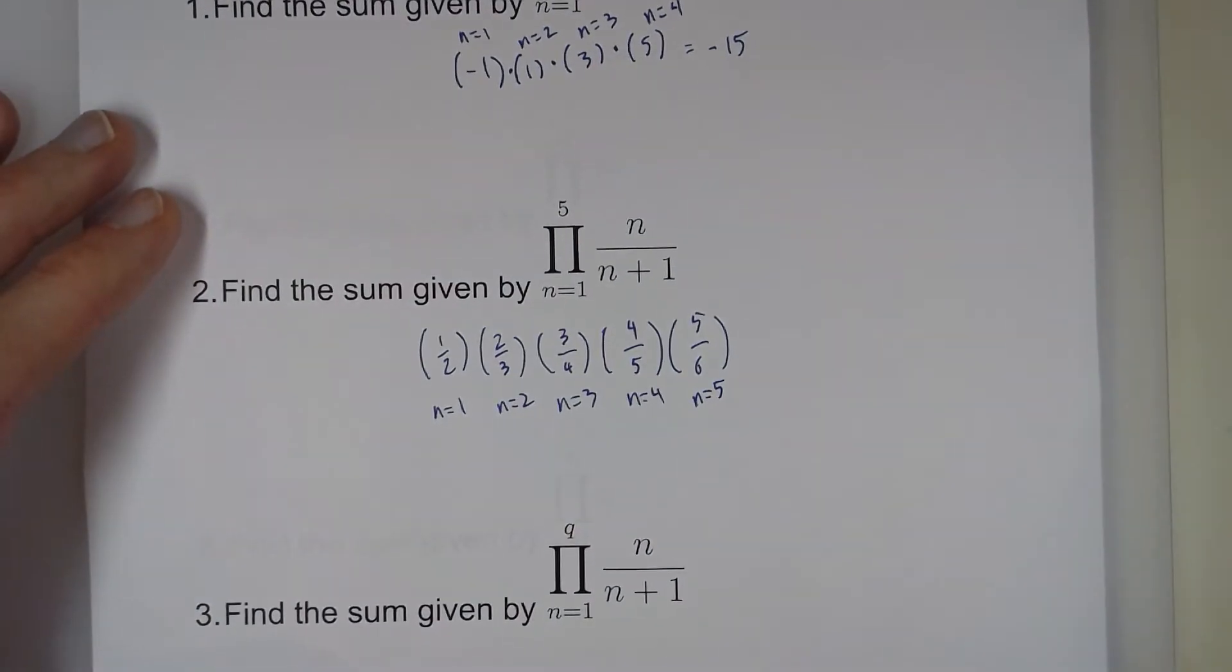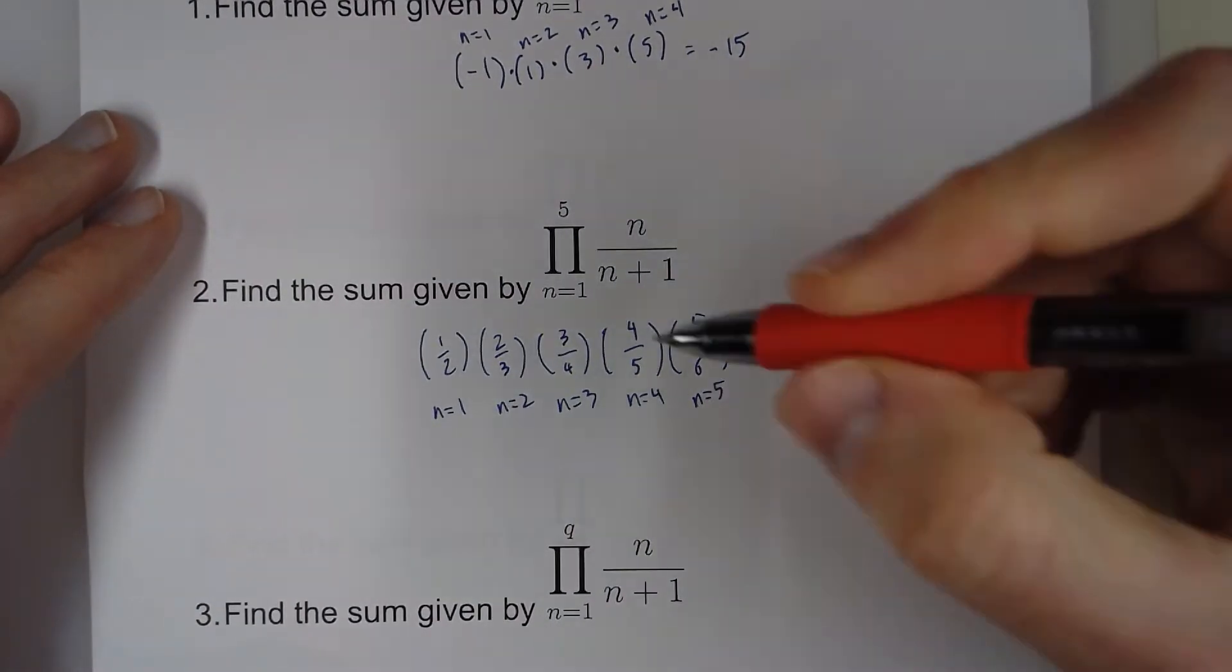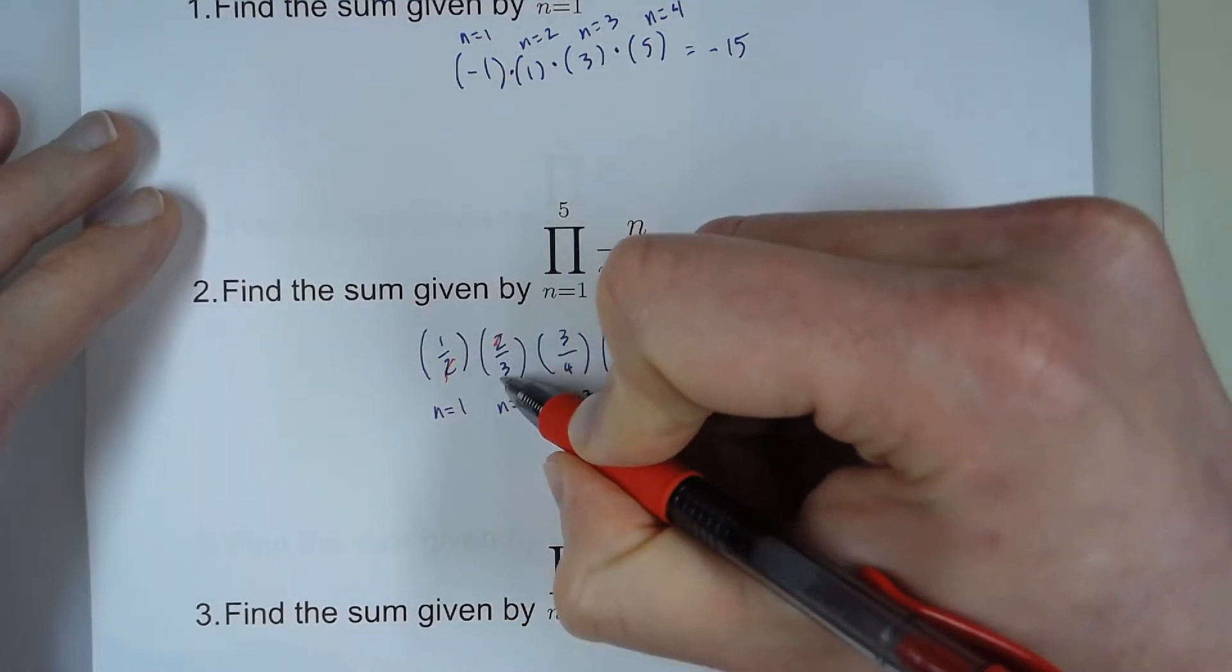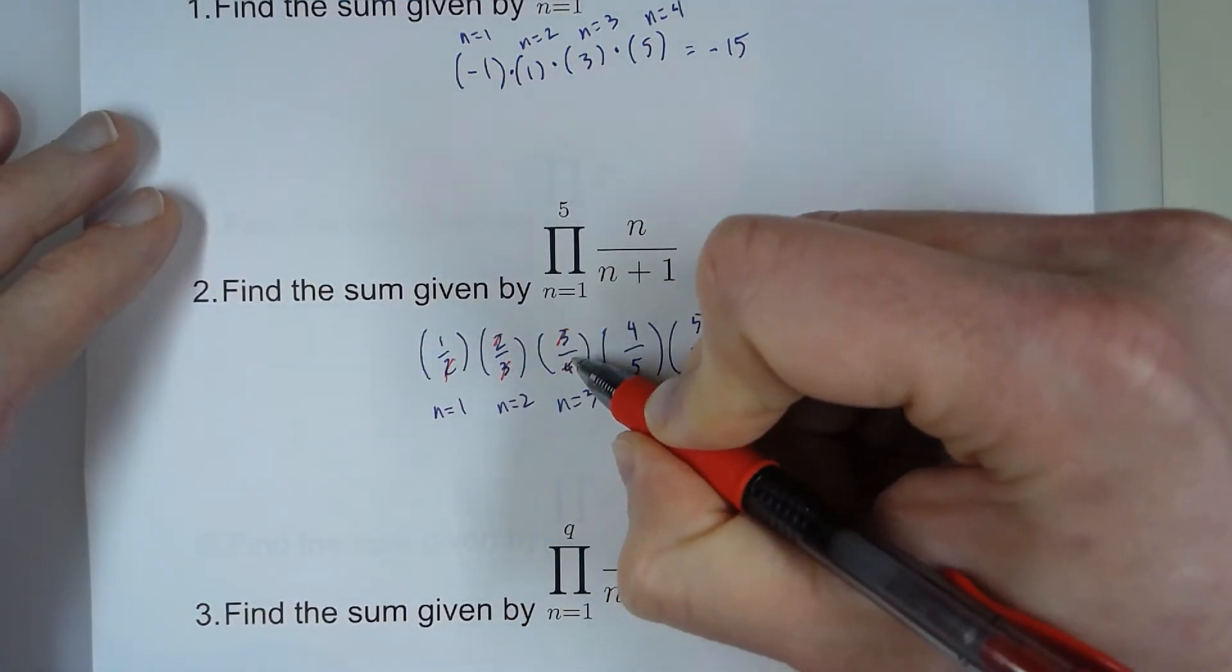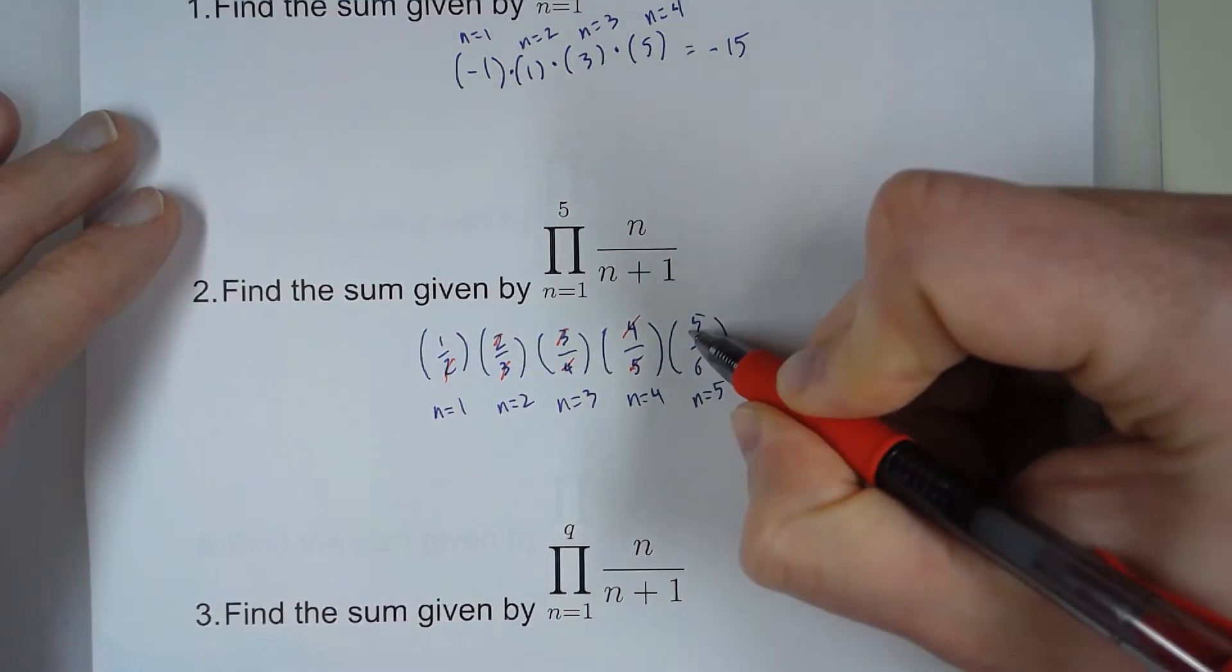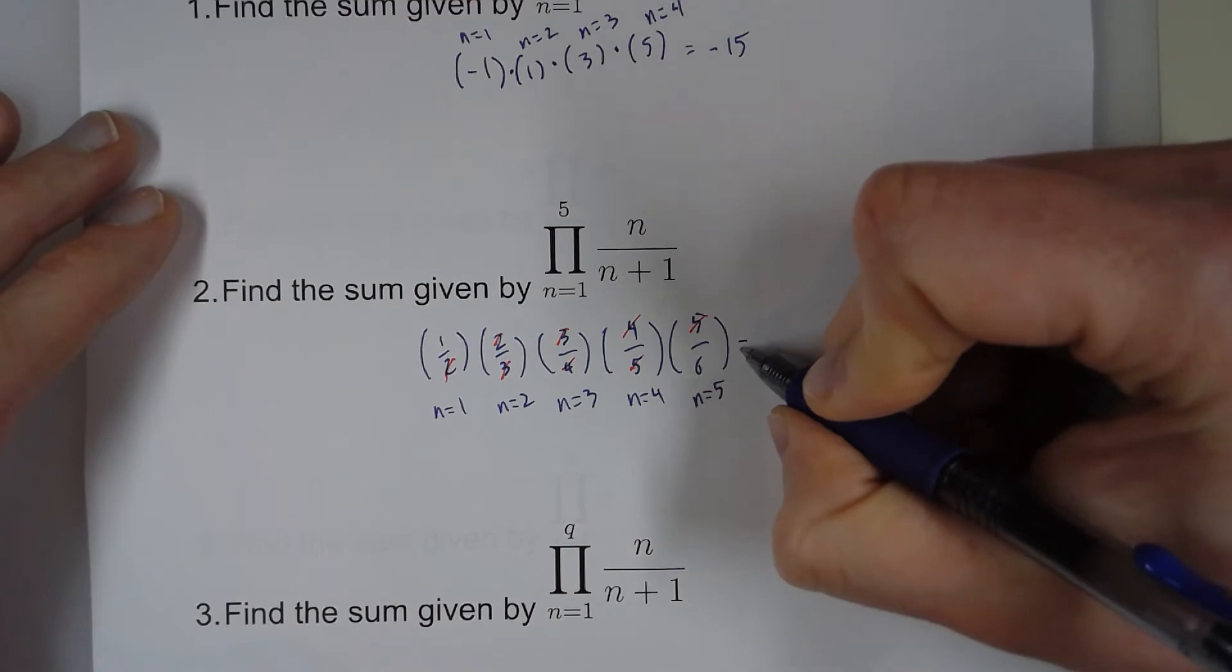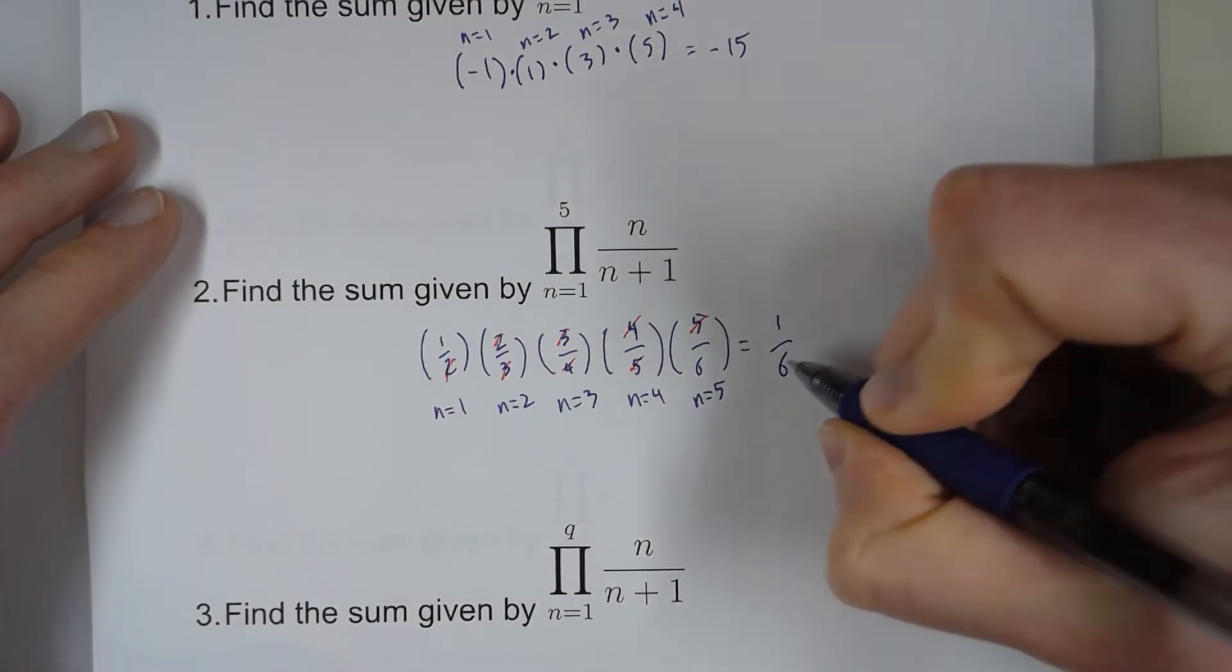Since we're multiplying all of these with fractions, we can cancel out some things. The 2s, 1 on top, 1 on bottom. Same with the 3, the 4, and the 5. So what we're left with is just 1 sixth.